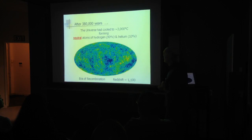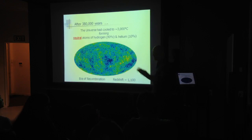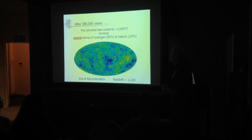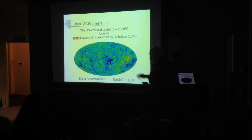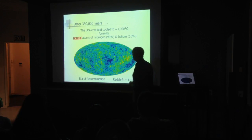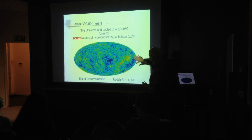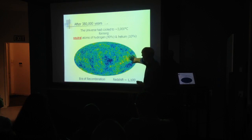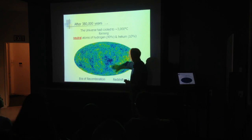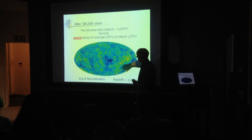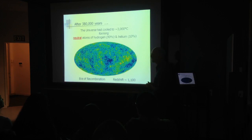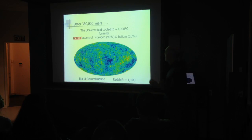Once you've got neutral atoms, photons can just travel through the universe without being interrupted by charged particles. So basically the universe became transparent. This is a picture taken by the Planck satellite, which is detecting this radiation coming to us today at microwave wavelengths — the Cosmic Microwave Background.